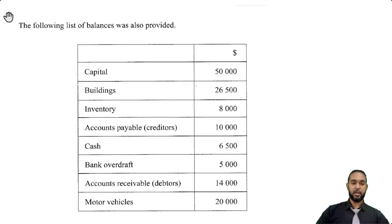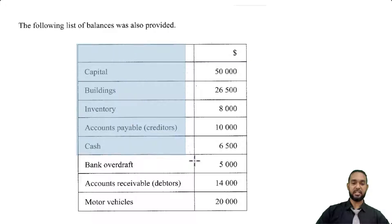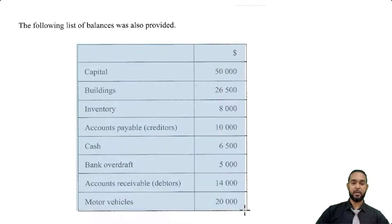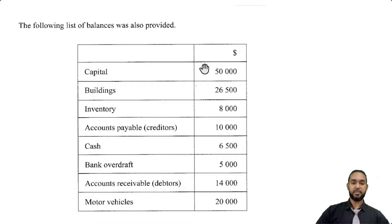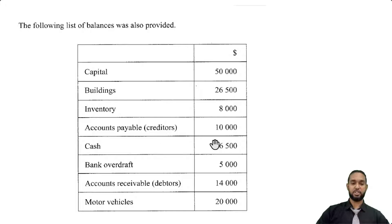They also tell us that the following list of balances is provided. We have a little table down here: capital 50,000; buildings 26,005; inventory 8,000; accounts payable or creditors 10,000; cash 6,500; bank overdraft 5,000; accounts receivable or debtors 14,000; motor vehicles 20,000.